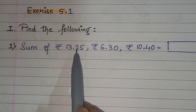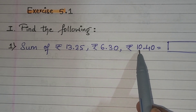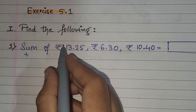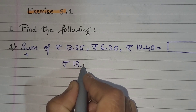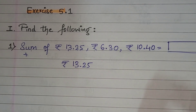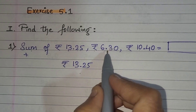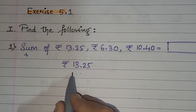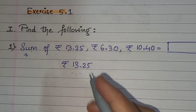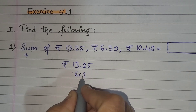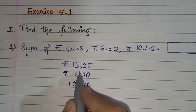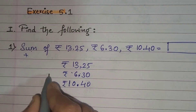So 13.25: the .25 means paise. Here 6 is rupees, .30 is paise. 10 is rupees, .40 is paise. When keeping these numbers in column form, the decimal point should come exactly below the other. So 6.30 rupees — the decimal should be aligned below. Now let's add all these rupees.